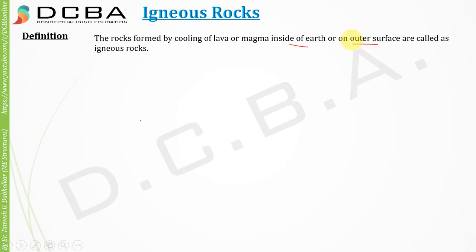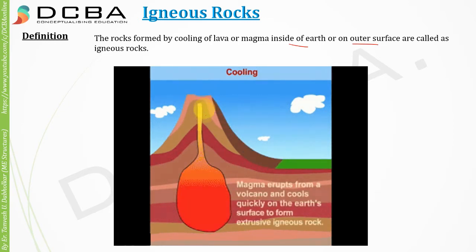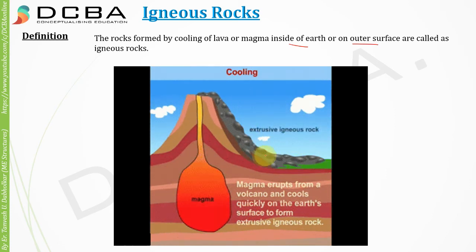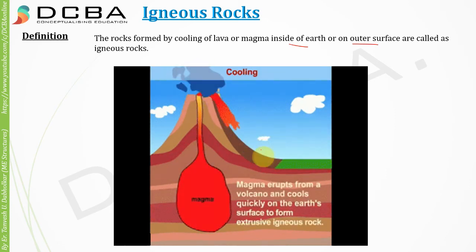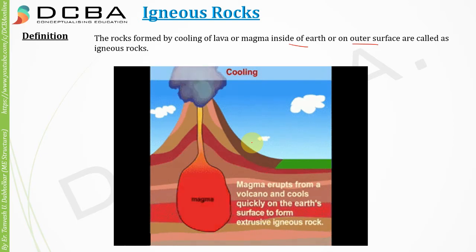When magma erupts outside and cools, these are your igneous rocks. When it cools outside it is called extrusive igneous rock, and when it cools inside it is called intrusive igneous rock.